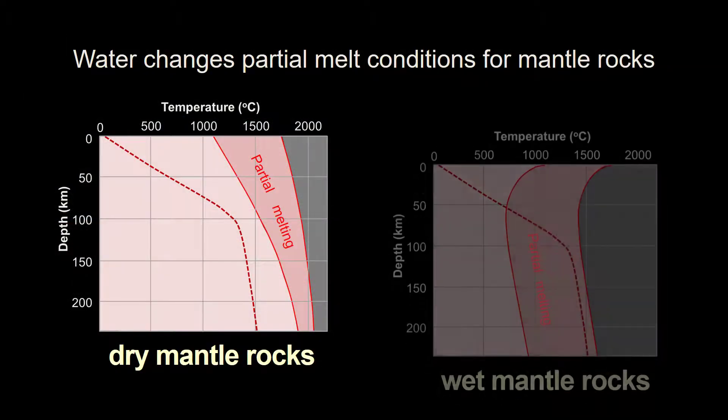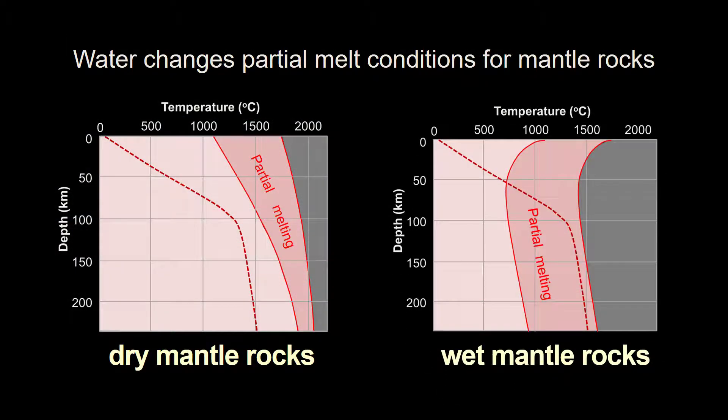The presence of water completely realigns the position of the solidus and liquidus for the mantle rocks. Rocks that would have been solid under normal conditions at around 100 km are now well inside the partial melting field.